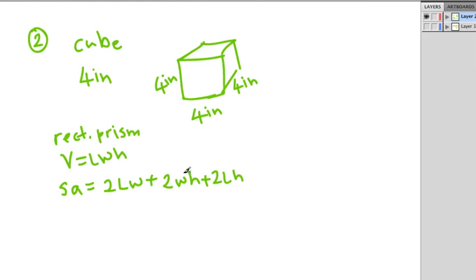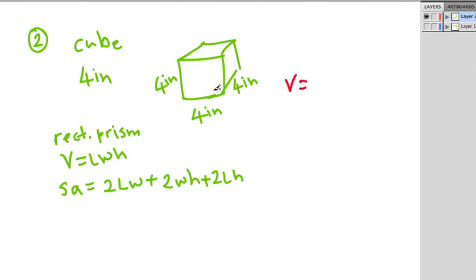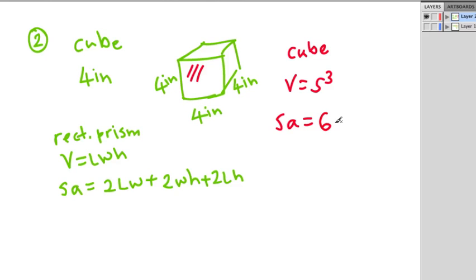For a cube, since length equals width equals height, we can use simpler formulas. The volume of a cube is side times side times side, which is s cubed. The surface area formula for a cube is 6s squared — because one face has area s squared and there are six sides on a cube. We use s squared because we're dealing with area, the surface on and around the shape.